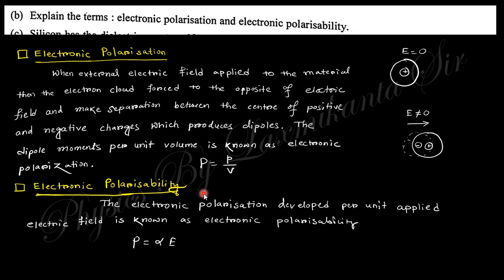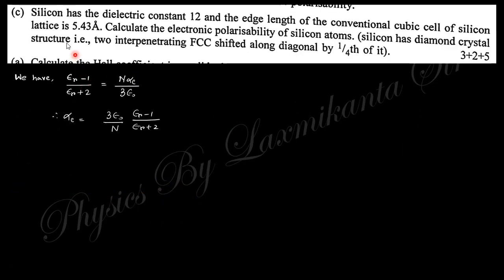This is question 5c, where the dielectric constant and conventional cubic lattice constant are given, and you need to find the electronic polarizability. Electronic polarizability can be found from this formula, but we cannot find the value of n here. This is question number 5, so I won't solve it at this moment. If I can do this, I will provide it in the playlist or comment box. If anyone can solve this question, please comment.